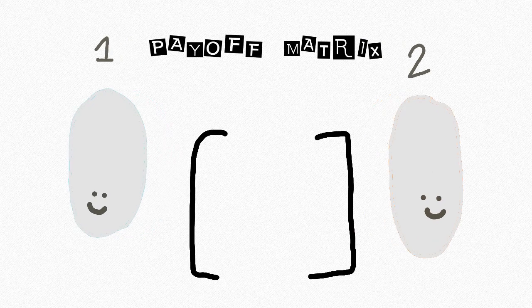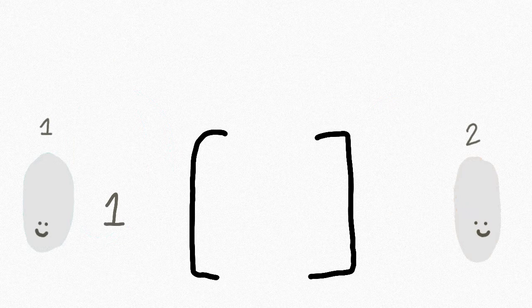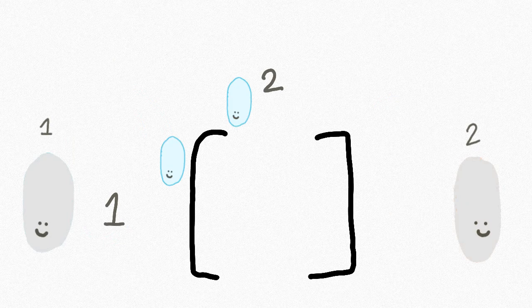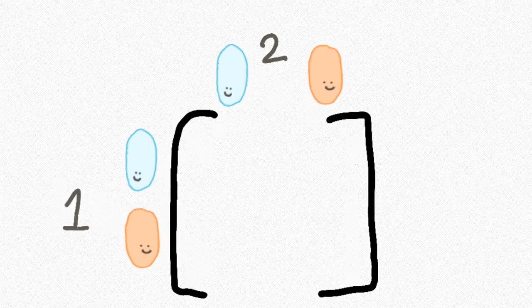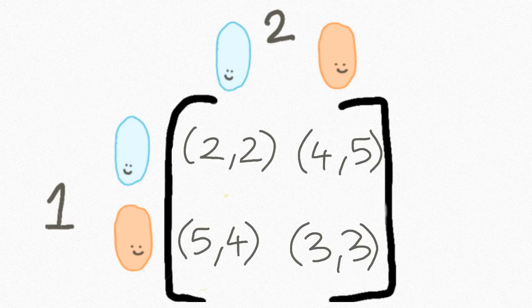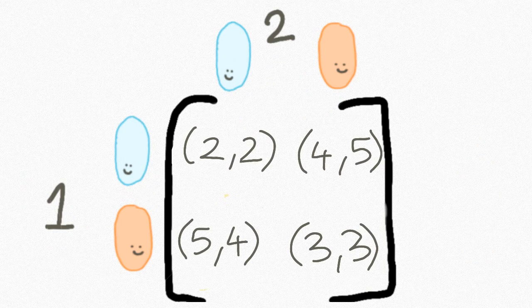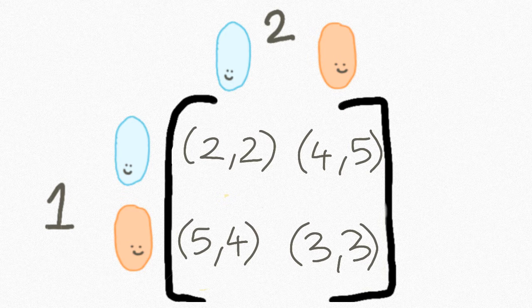So suppose we chose two bacteria from the petri dish at random. We label them arbitrarily player 1 and player 2. We can now construct a payoff matrix to show an encounter between these two bacteria. Player 1 plays on the row and player 2 plays on the column. They could either have alleles of the blue strain or of the orange strain. Here are some completely random payoffs. Do you notice that they're symmetrical though? In this simplified model there's no advantage to being player 1 or player 2.